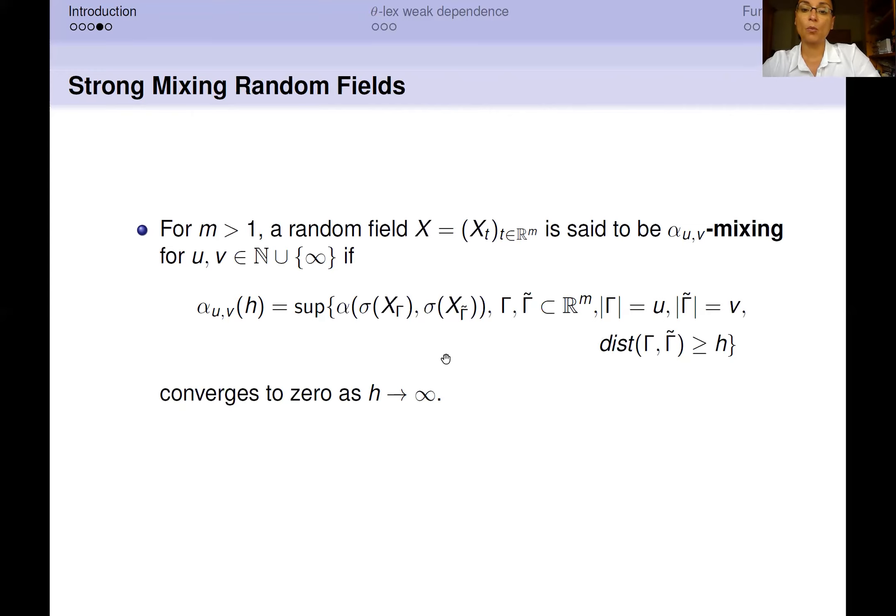This coefficient is also defined as a supremum with respect to the sets Γ and Γ̃. They are two finite subsets of ℝ^M, respectively of dimension U and V, and such that all the elements of the two sets are at least a distance h between each other.